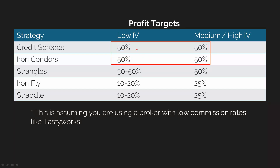For credit spreads and iron condors, you're going to look for around 50% profit — easy math — in both low and medium or high implied volatility. Basically in any case, targeting 50% is the target. For strangles, they set up very similarly to iron condors — you just remove the long calls and puts on each side. TastyTrade recommends being more aggressive during periods of low implied volatility, so the profit target drops to about 30–50% in low IV. As IV creeps up — and it's April 15th so we're seeing better IV now — you still sell premium but may not need to push all the way to 50%.